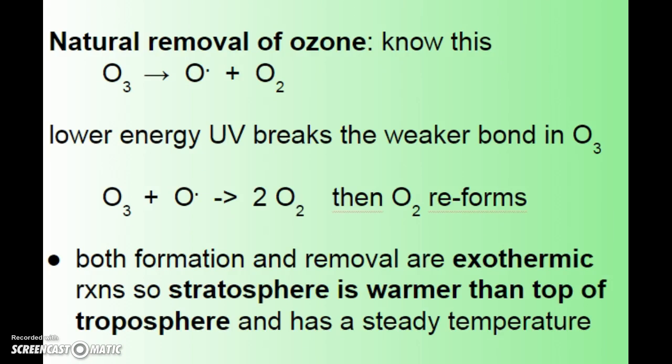Both reactions in the natural removal of ozone don't require UV light, so they're exothermic processes. That's why the stratosphere above us is actually warmer than the top of the troposphere. As we go up in the mountains we notice it gets cooler, but if you went high enough into the stratosphere, there's actually a rewarming up there because of this ozone process.